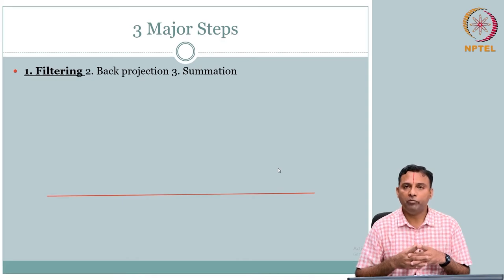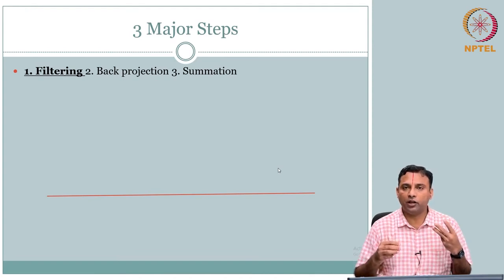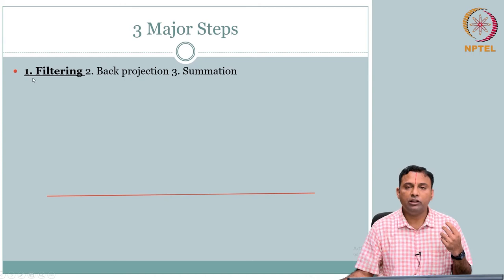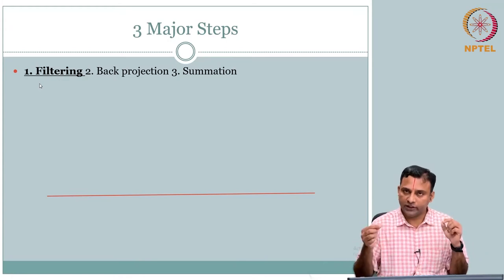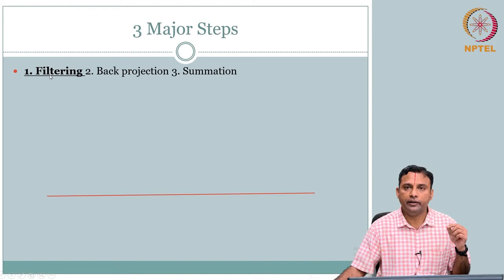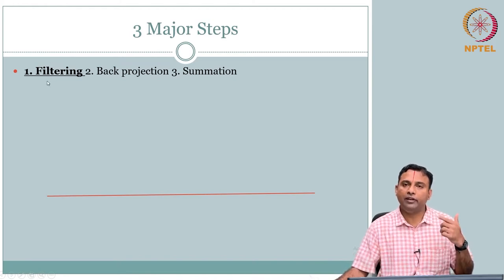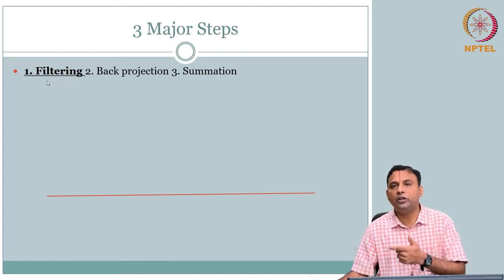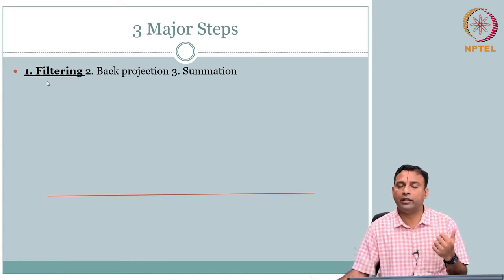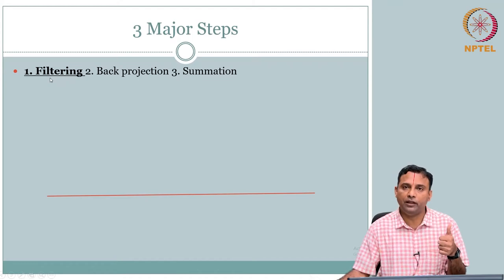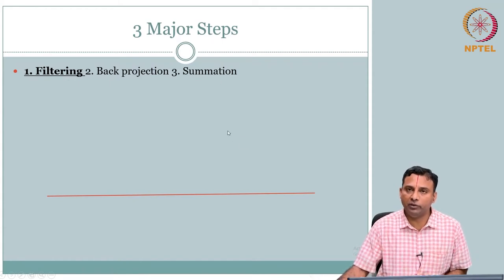Before we move on, let's recap. We have three major steps in this reconstruction that we saw so far. First is filtering — you get your data acquisition as projections, and that projection data has to be filtered. Filtering can be accomplished in the frequency domain or in the time domain, which came as filtered back projection or convolution back projection. Filtering is the first step after you collect the raw data, and then you have to do back projection. Finally, summation. So these are the three major steps.